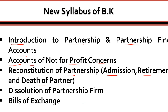The next chapter is Dissolution of Partnership Firm, which is also one of the important chapters. This means our business is dissolved — our business is closed. When our business is closed, how do we close it and in what way? All these points are covered in this chapter.